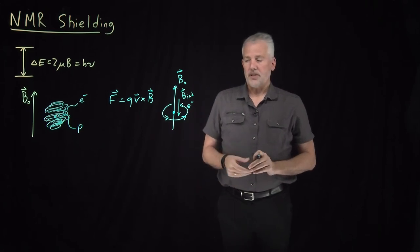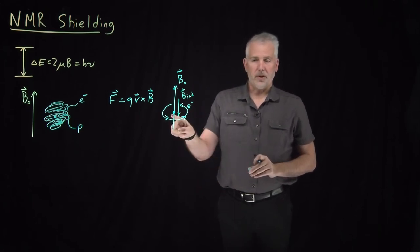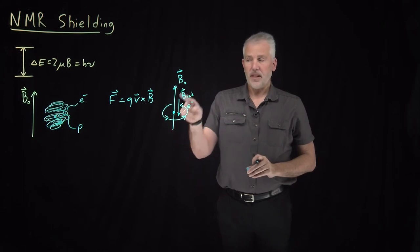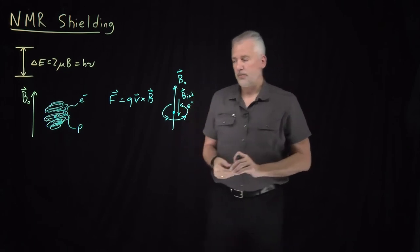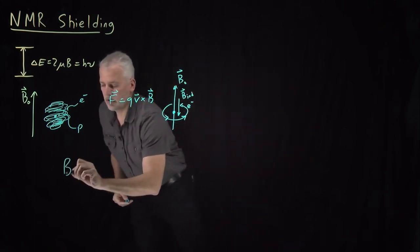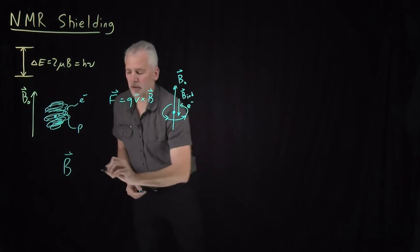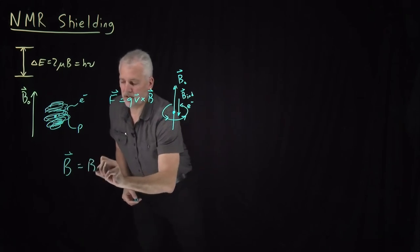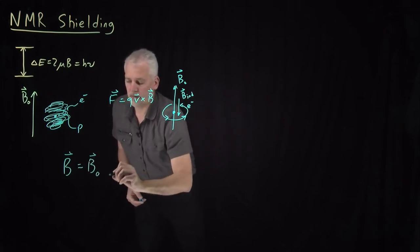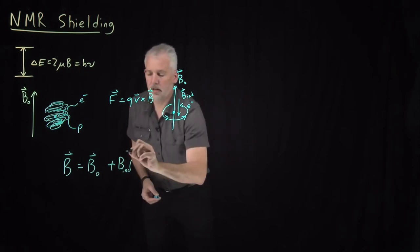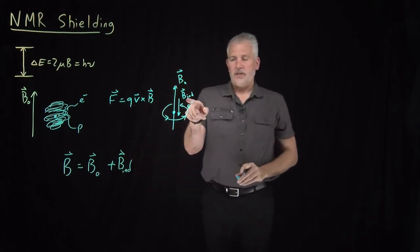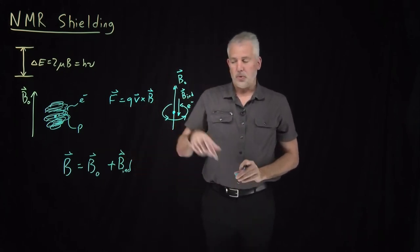What that means is the total magnetic field experienced at the nucleus is not the external magnetic field generated by the magnet, but it's a little bit smaller. In fact, the total magnetic field experienced at the nucleus is the external magnetic field added to this induced magnetic field which points in the opposite direction.